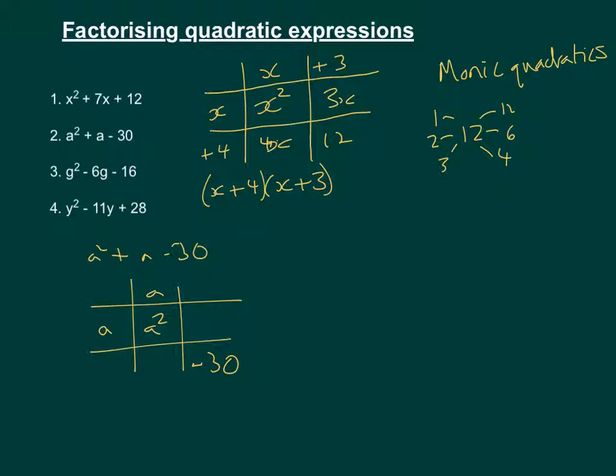So if the product is negative, that means that one of them is going to be negative and one of them is going to be positive. So we could say that this one's negative and this one's positive.